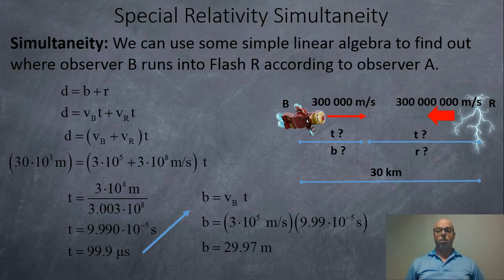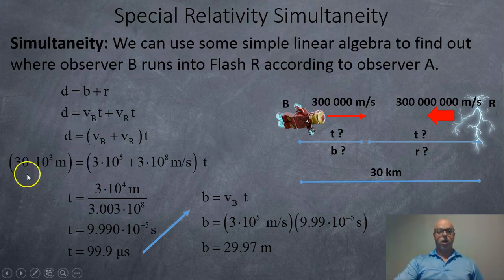There's a 30 kilometer gap, and the two velocities are working together to close in the gap, according to observer A that is. So what's going to happen, if you work this out, is you got your 30 kilometers, or 30 times 10 to the 3 meters, you got the velocity of observer B plus the speed of light together.